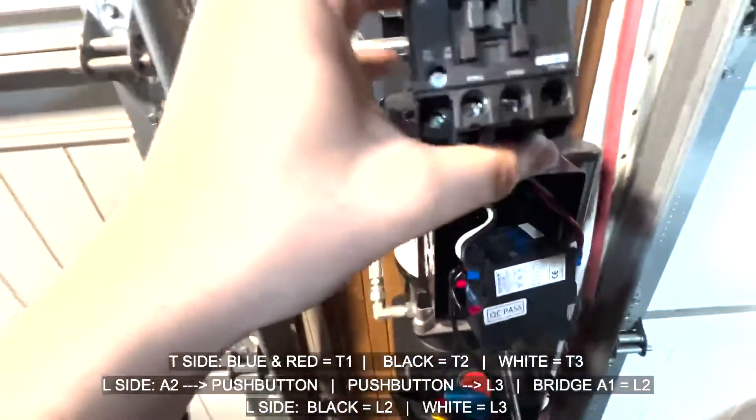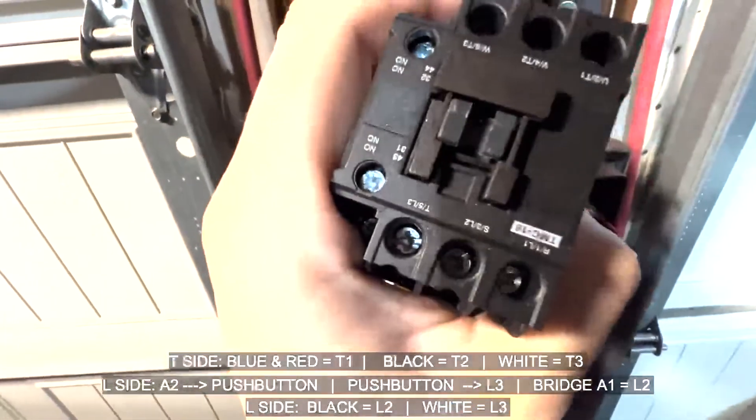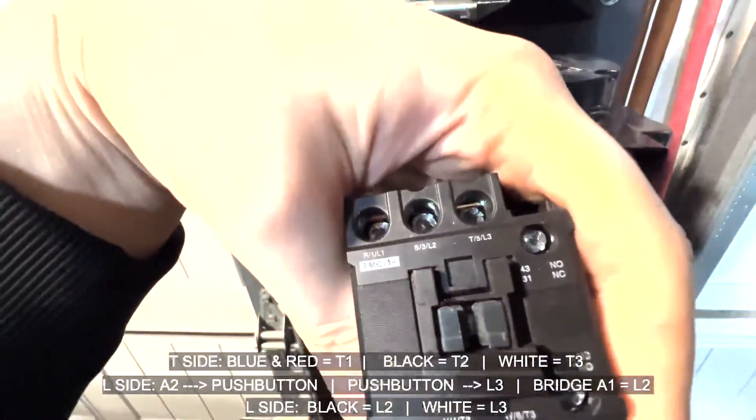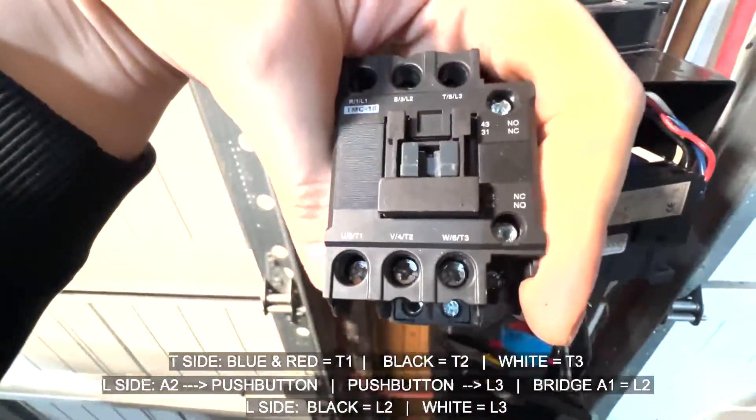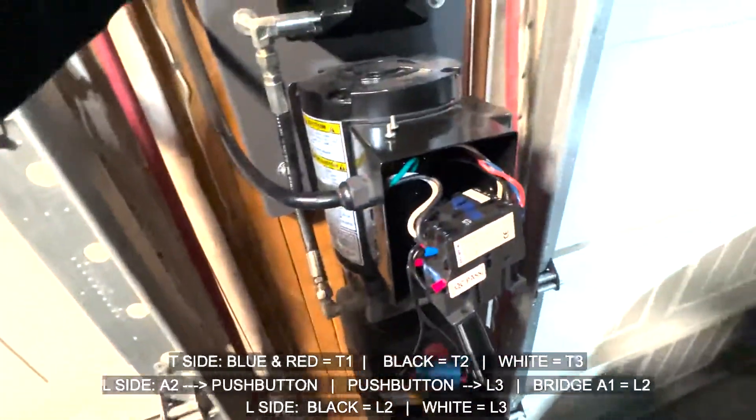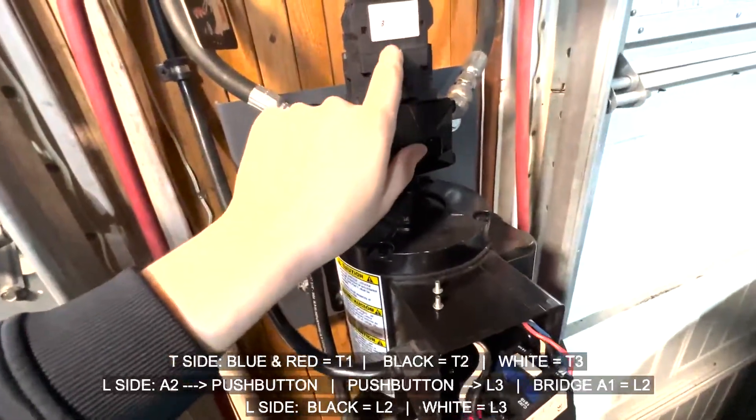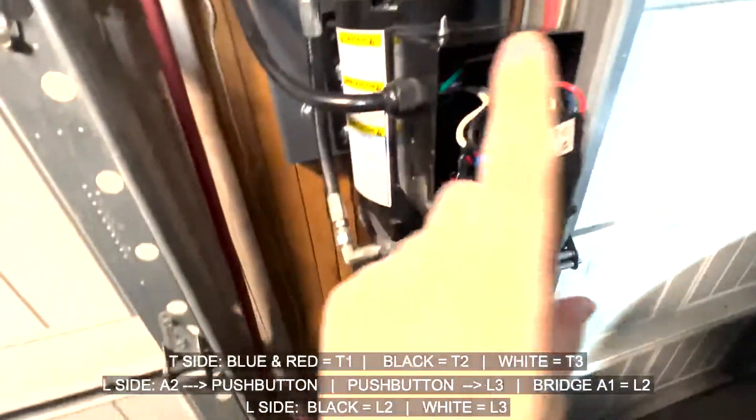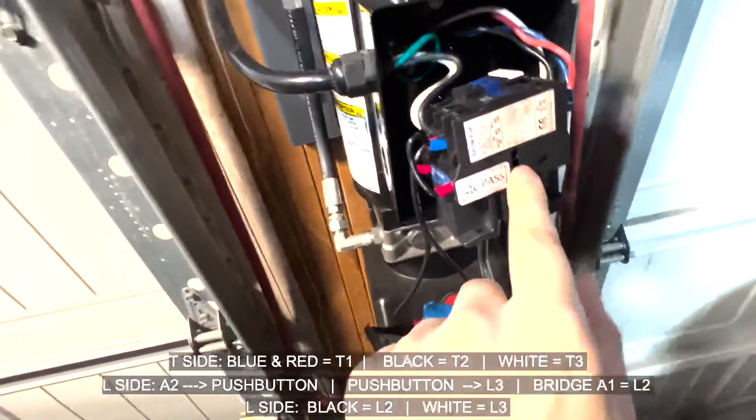The same process applies. So you see right here you have your L1, L2, and L3, and then you have your T1, T2, and T3. So everything with your stock TMC 18 contactor will be exactly the same as with this one. So I will have this one linked down in the description. This is how you wire up your MaxJax lift to 220.